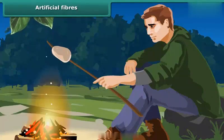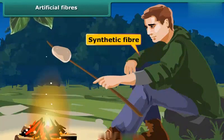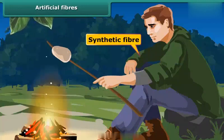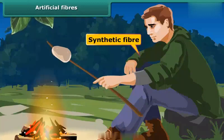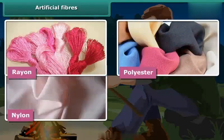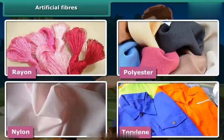You might have heard that we should not wear synthetic clothes while working near fire. What are synthetic clothes made of? These clothes have yarns of man-made artificial fibers. These fibers catch fire very easily. Some examples of synthetic fibers are rayon, polyester, nylon, and terrylene.